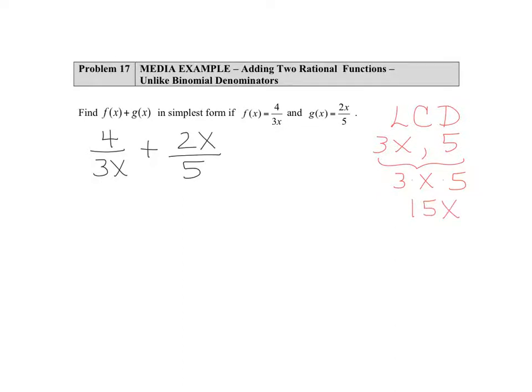So next what we want to do is take each of our fractions one at a time, 4 over 3x, and say what would this be equivalent to with a common denominator of 15x?